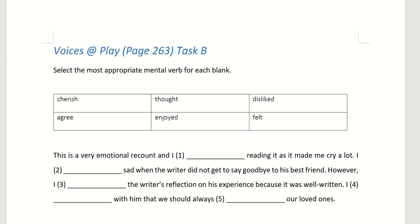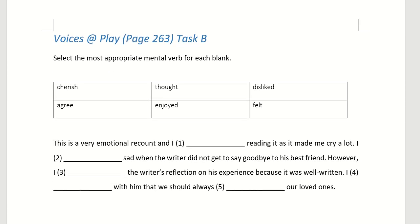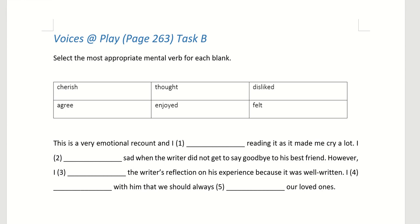Now we've done Task A. Let's move to Task B: Select the most appropriate mental verb for each blank. Let's look at the options first. Cherish — cherish means treasure. The other options are: thought, dislike, agree, enjoy, felt.